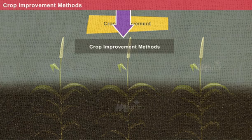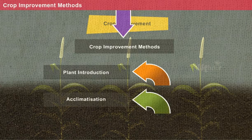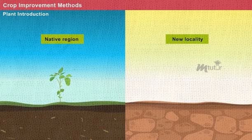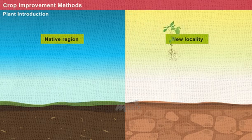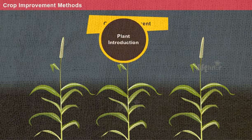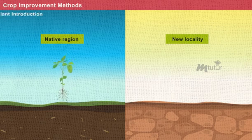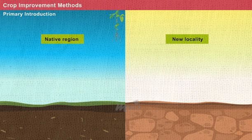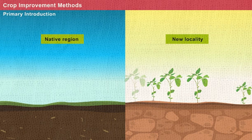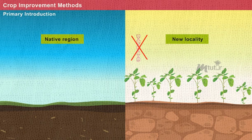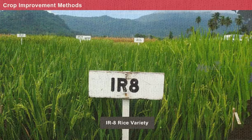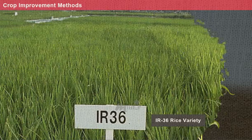In this lesson, we will discuss plant introduction and acclimatization process. Plant introduction is defined as the process of introducing plants from their native regions to a new locality. On the basis of adaptation, plant introduction is categorized as primary introduction and secondary introduction. In primary introduction, the crop is directly introduced to a new environment for commercial cultivation without any alterations in the original genotype. Example: IR8 and IR36 varieties of rice.